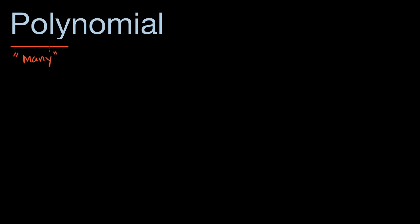The first part of this word — let me underline it — we have 'poly'. This comes from Greek for many, and you see poly a lot in the English language, referring to the notion of many of something. So in this case, it's many-nomials, and 'nomial' comes from Latin, from the Latin 'nomen' for name. So you could view this as many names, but in a mathematical context, it's really referring to many terms, and we're going to talk in a little bit about what a term really is.